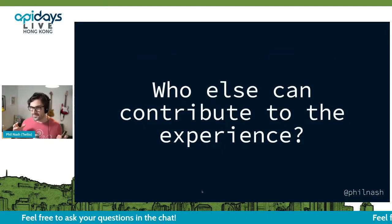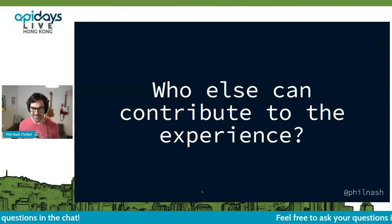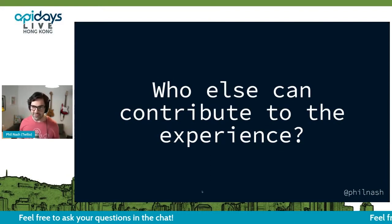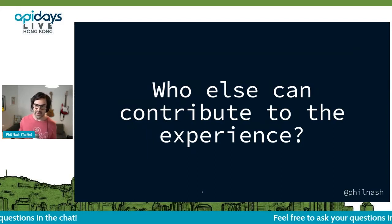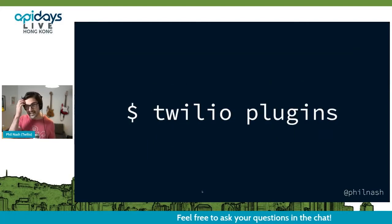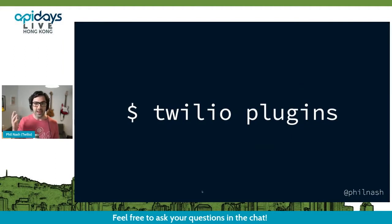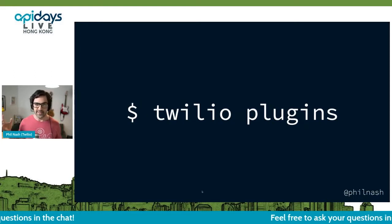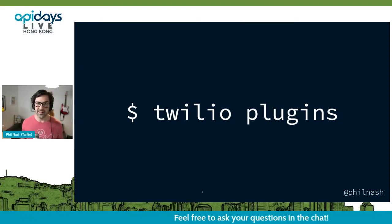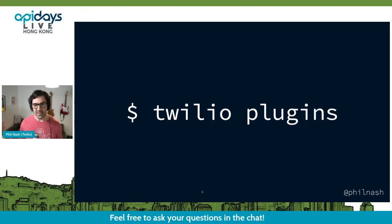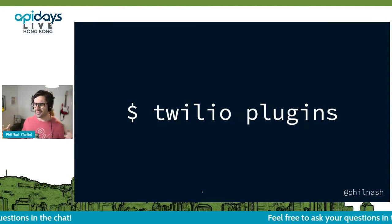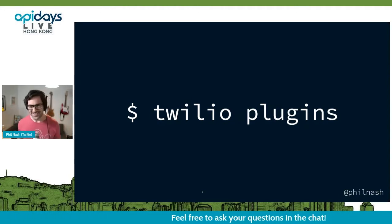And then finally, the question is who else can contribute to this experience? Providing all the things we've seen so far is great, but once you have that, you can actually open up a whole bunch of other opportunities. That leads us to plugins. It's one of the best reasons we used Oclif — that Heroku-based framework for building the CLI — because Oclif has a plugins plugin that allows you to include plugins in your own CLI.